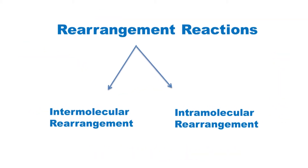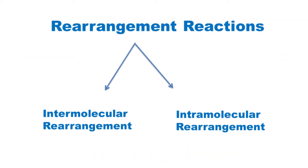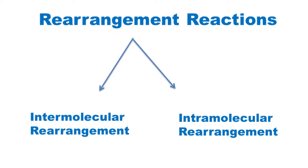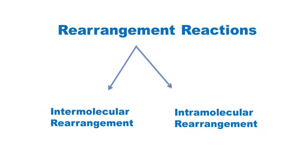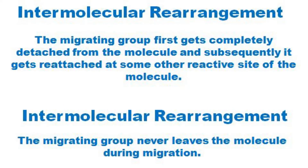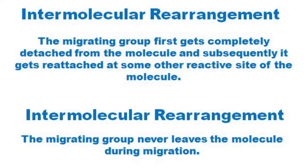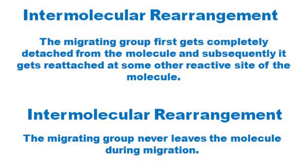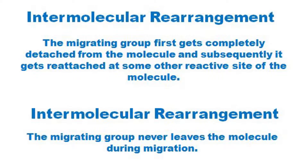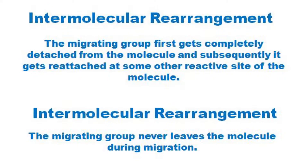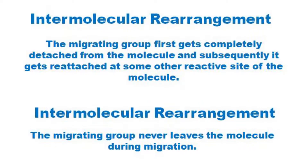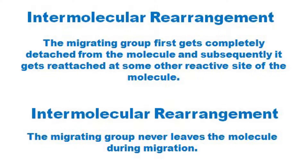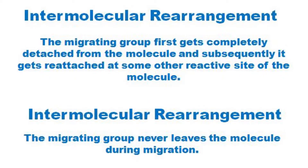Generally, rearrangement reactions are of two types: intermolecular rearrangement and intramolecular rearrangement. In intermolecular rearrangement, the migrating group M first gets completely detached from the molecule and subsequently it gets reattached at some other reactive site of the molecule.